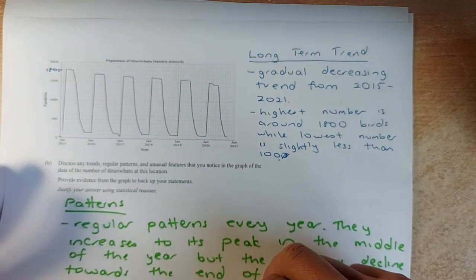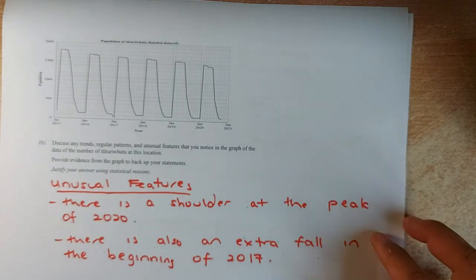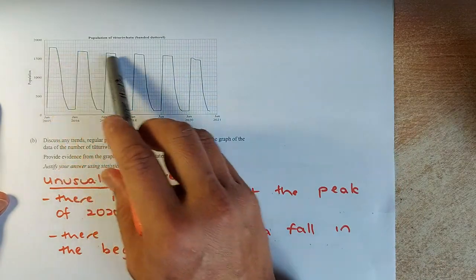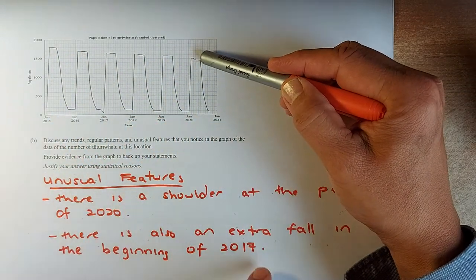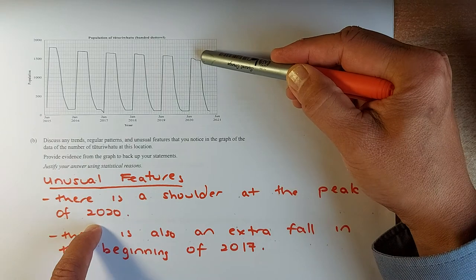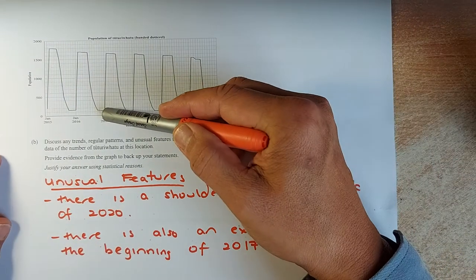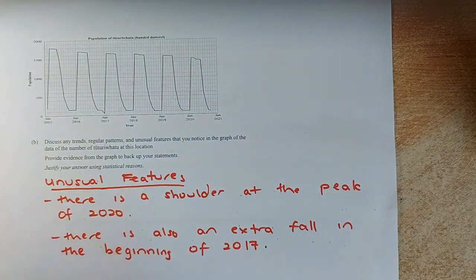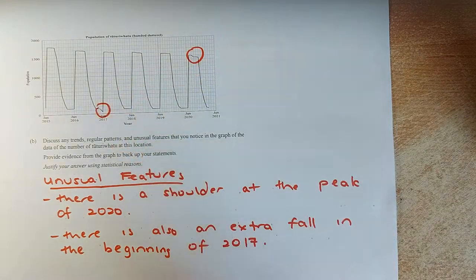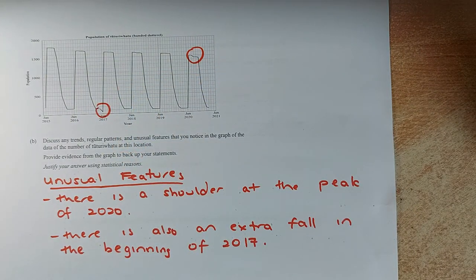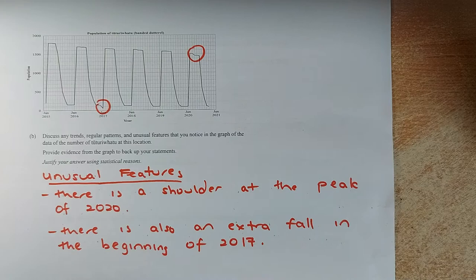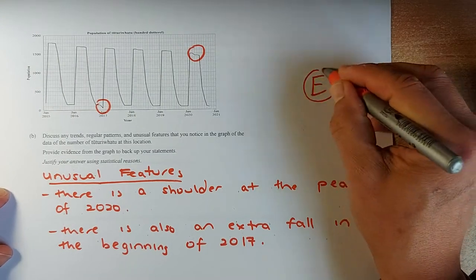And the last question, you talk about unusual features. The unusual features, I look at this, the trend, there's a shoulder at the peak in 2020, and also there is an extra fall in the beginning of 2017. So these two points are unusual features and we have to investigate further. In this paper, if you write one reason, you get an achieve. You get two reasons, you get a merit. And you get all three reasons, you will get an excellence in this question.